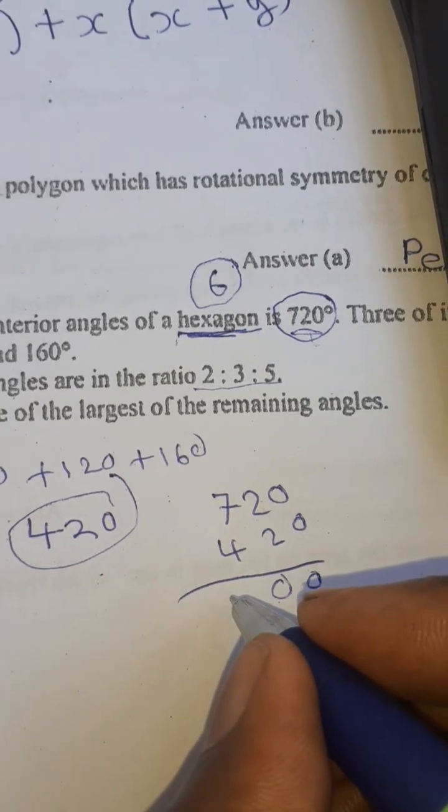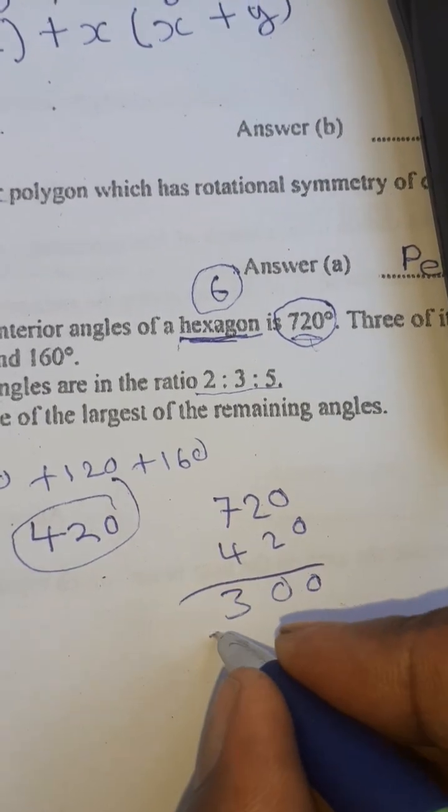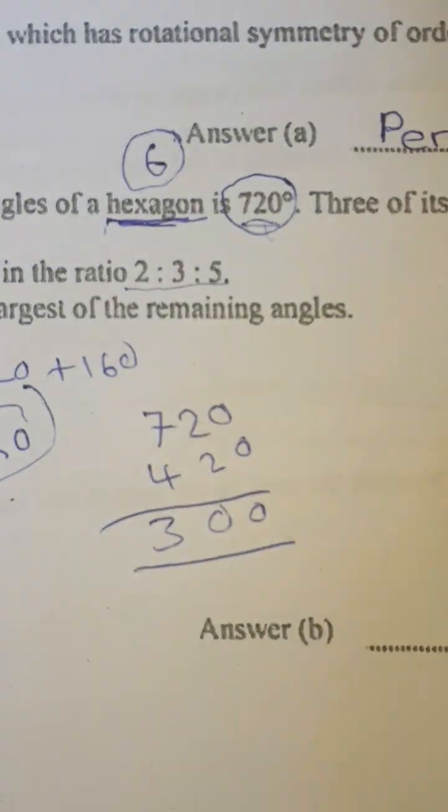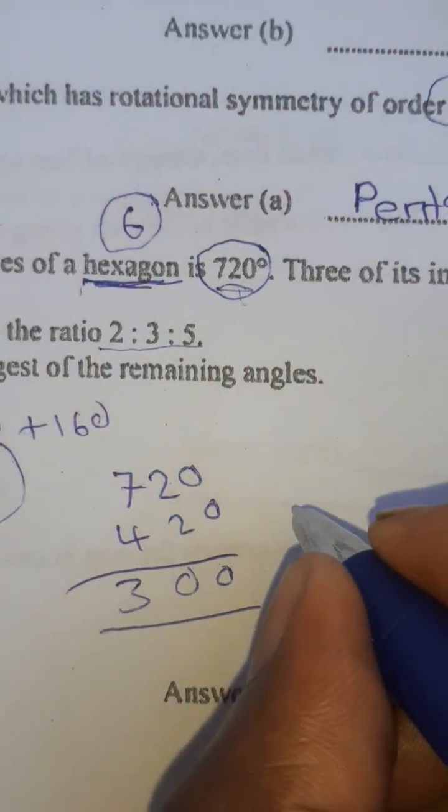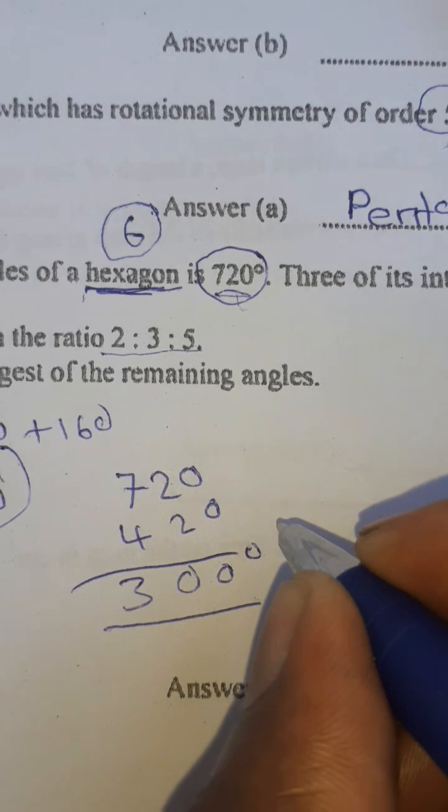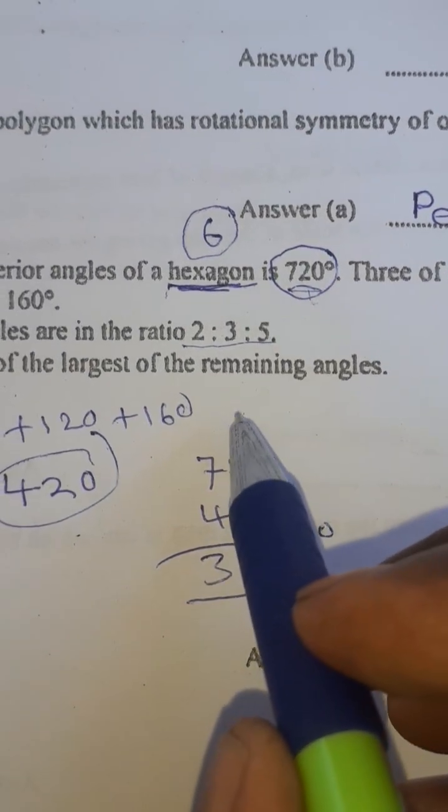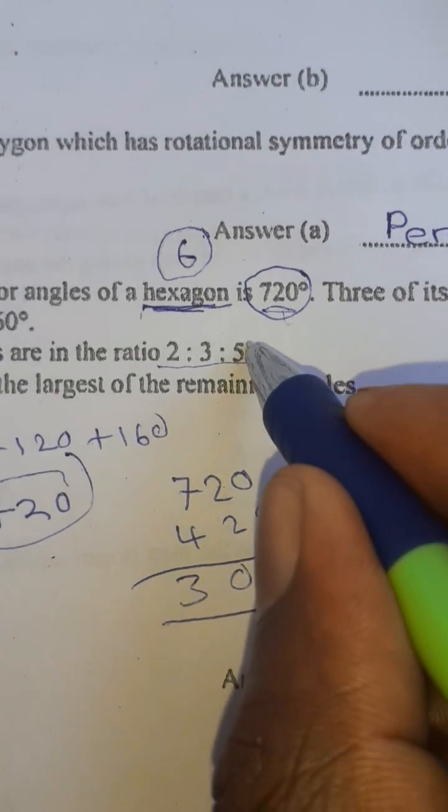720 minus 420, you get 300. So the remaining angles are 300 degrees. The remaining three angles are 300 degrees. I want to find the largest remaining angles.